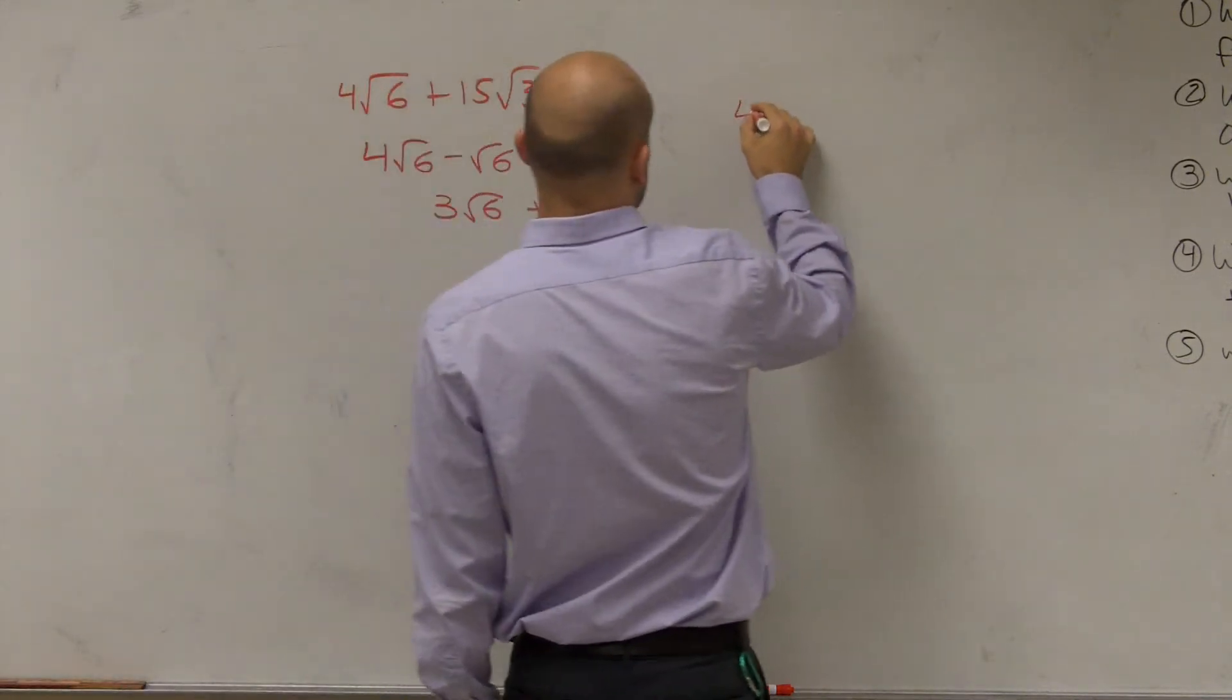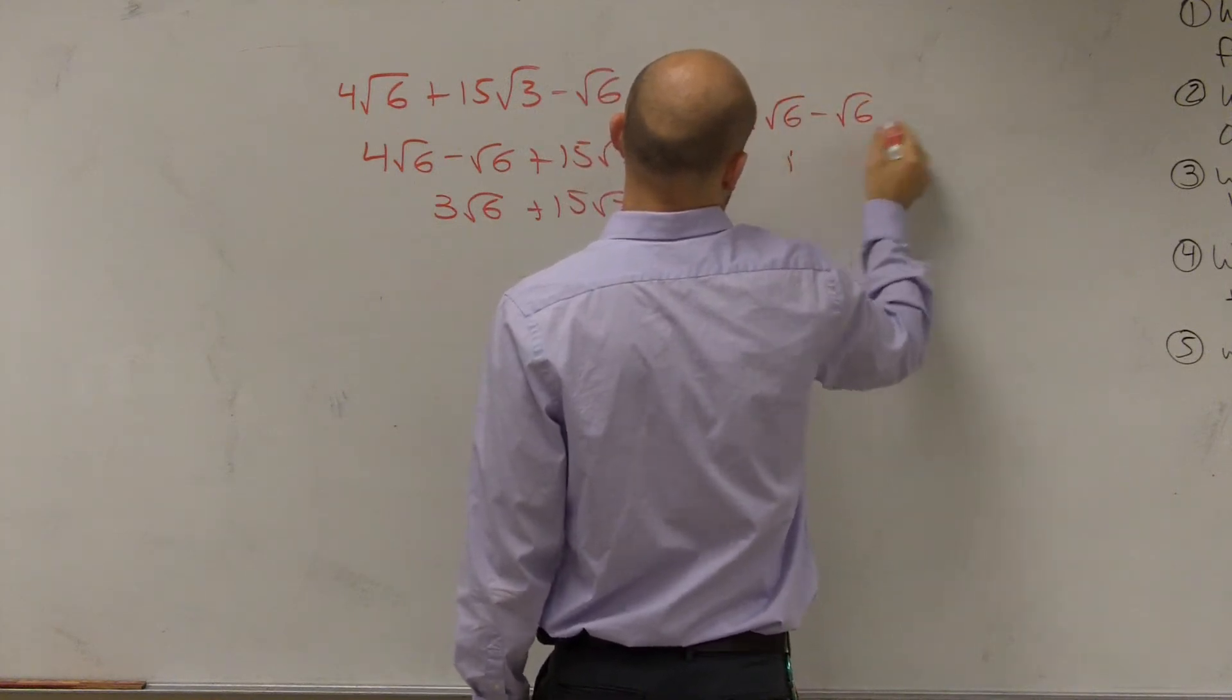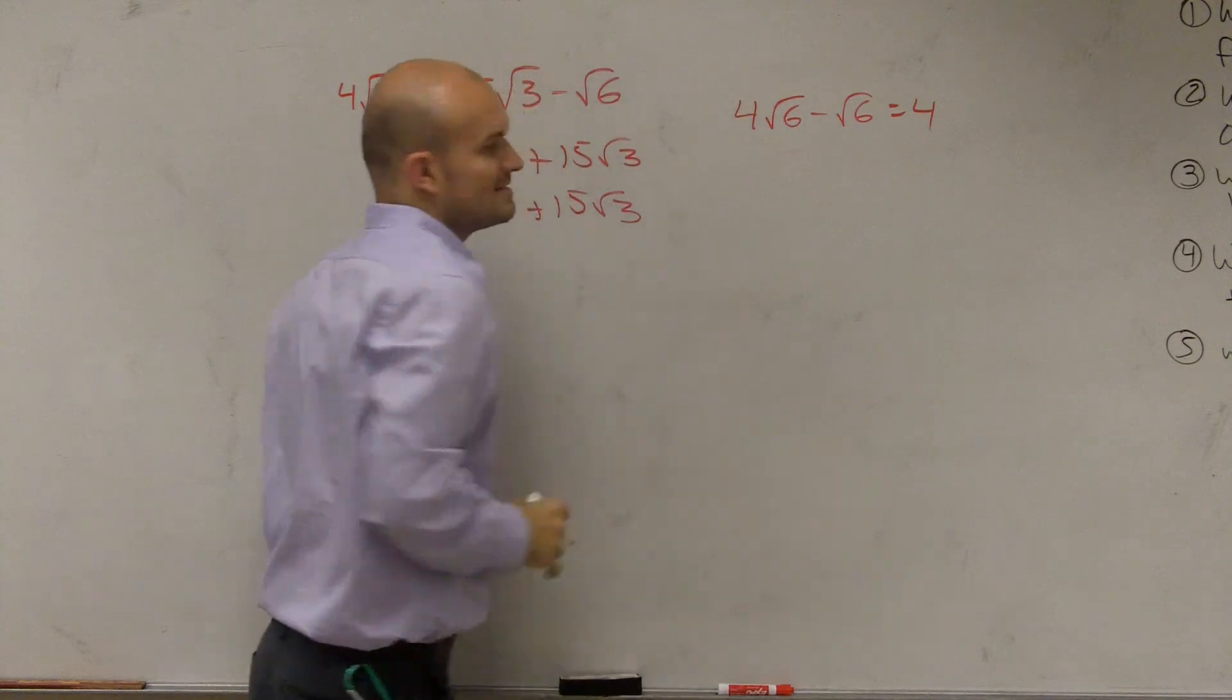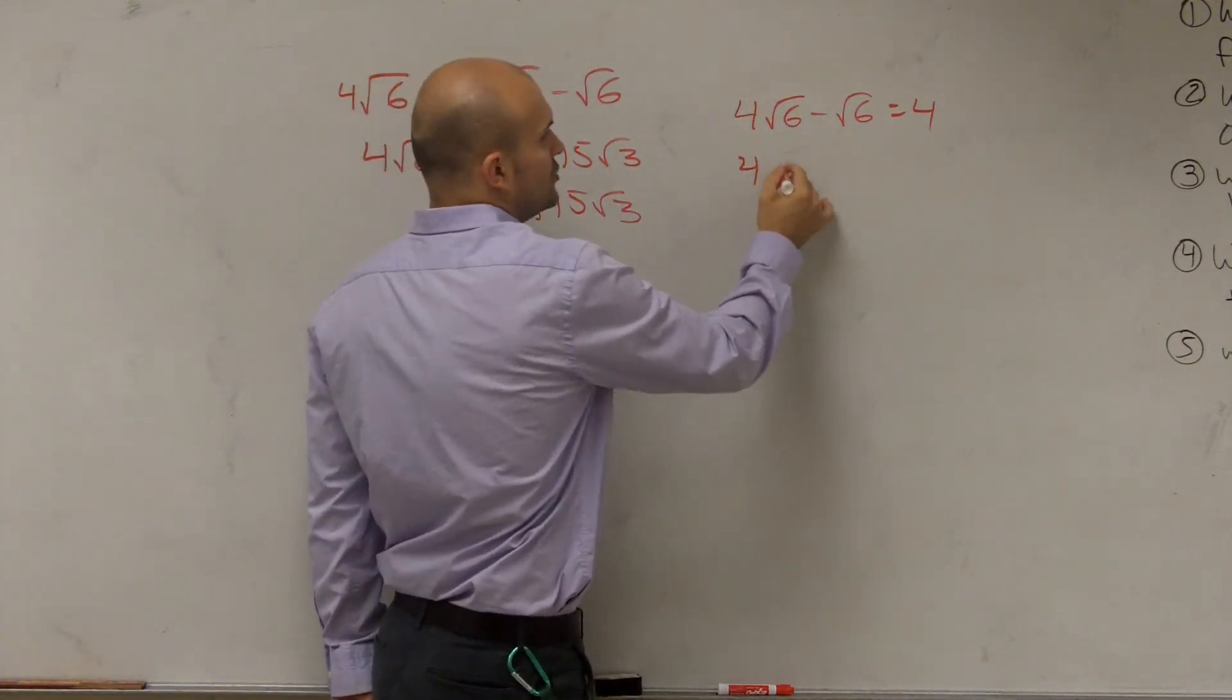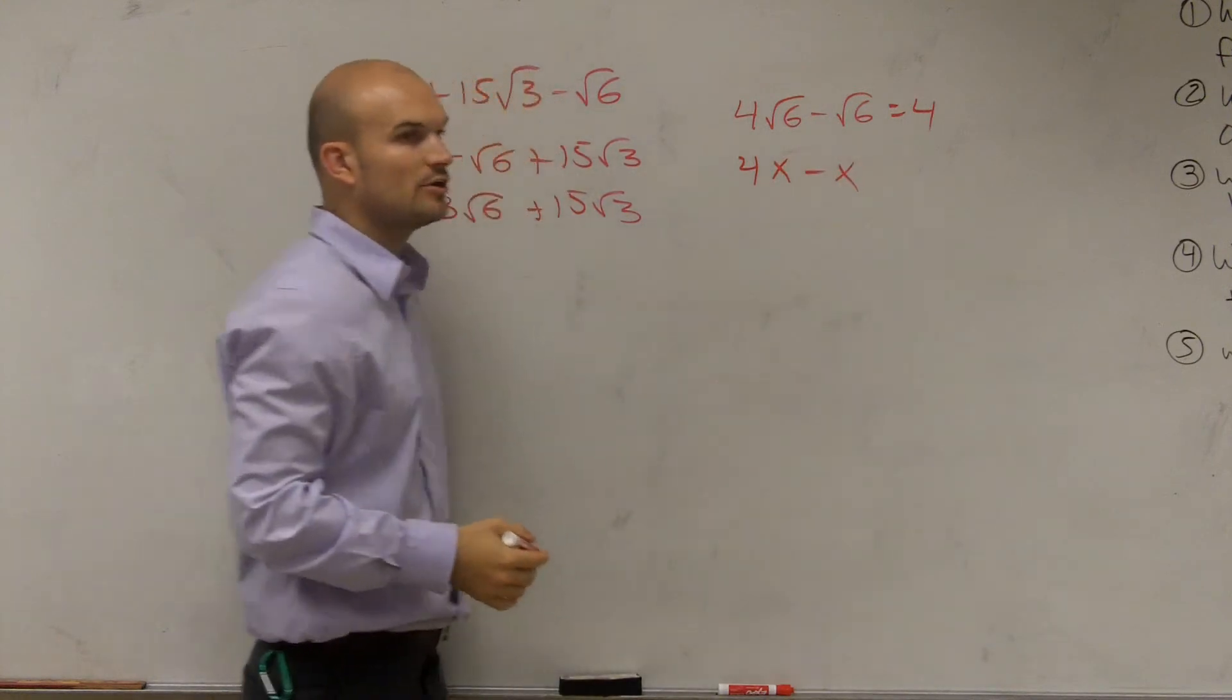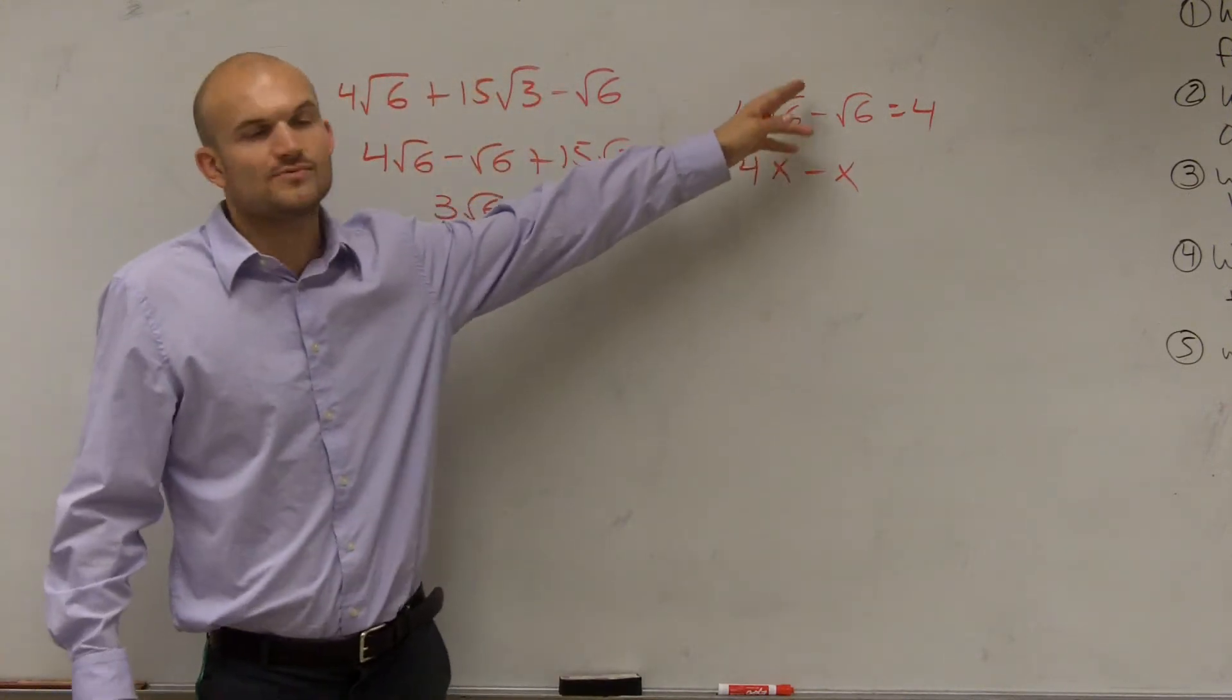Now, here's a big misconception. A lot of students want to say, why isn't it just radical 6 minus 6? Well, when you use the same example, you can think of these just as variables. It's the exact same thing. They're just like any other base with an exponent.